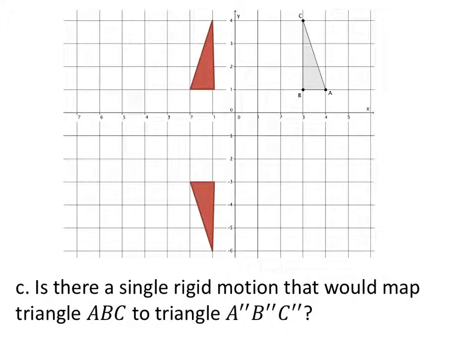Is there a single rigid motion that would map triangle ABC to triangle A double prime, B double prime, C double prime? Yes. How do we know? Because CB is parallel to C double prime, B double prime. And BA is parallel to B double prime, A double prime. And also A double prime, C double prime is parallel to AC. So we know there's a 180-degree rotation on this one.